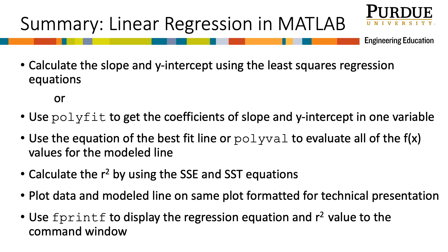In summary, we learned to do linear regression using MATLAB by calculating the slope and y-intercept using the least squares regression equations. We also learned that we could use the built-in MATLAB function polyfit to get the coefficients in one variable, using degree 1 for linear regression, where the first term is the slope and the second term is the y-intercept. We learned to calculate goodness of fit using SSE and SST to find R-squared, and we used a built-in function called polyval, although it is not required for this course. To display our results, we plotted the data and modeled line on the same plot formatted for technical presentation, and used fprintf to display the regression equation and r-squared value to the command window.